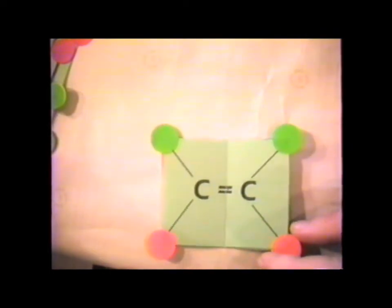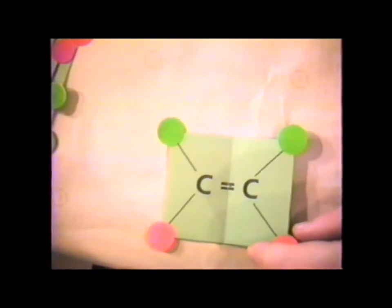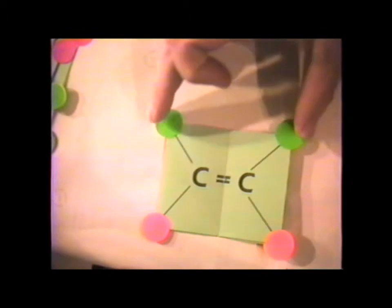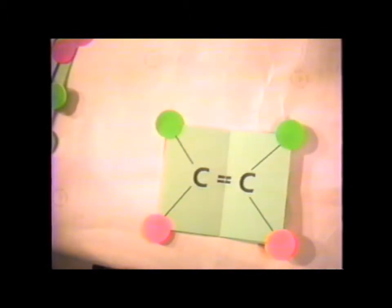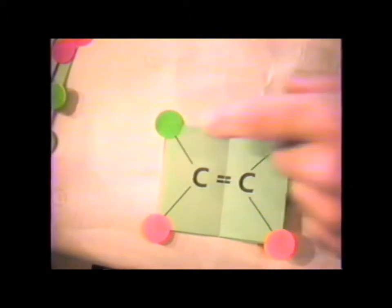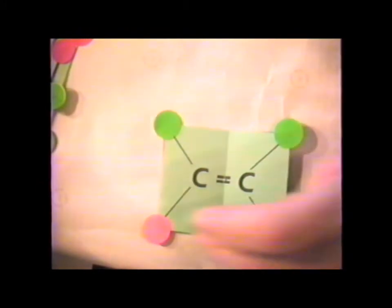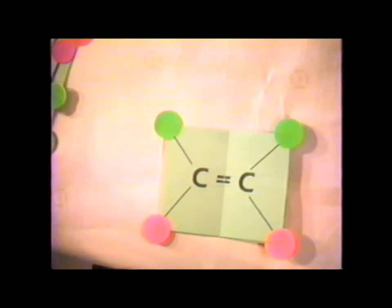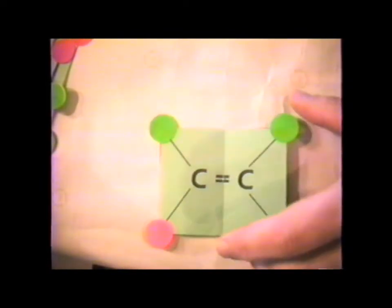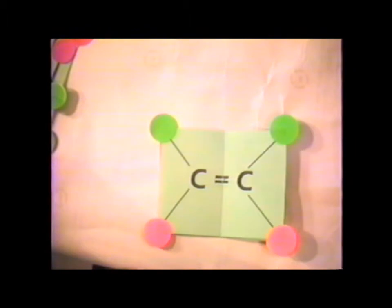The symmetries of cis-substituted ethylene. So the two green substituents, perhaps they'd be chlorines, are on the same side. And we could say that the two orange are going to be hydrogens, for example. So this is the cis-dichloroethylene. We want to see what the point group of cis-substituted ethylene is going to be.